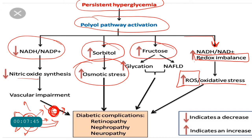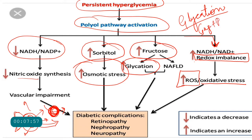When fructose is produced in the polyol pathway, it can cause glycation. Glycation is when a sugar molecule is added to a protein or lipid, producing toxic molecules called advanced glycation end products (AGEs). These trigger leukocytes, induce inflammation, and act as a source of oxidative and inflammatory damage to cells — particularly affecting endothelial cells and the basement membrane — and are therefore a cause of damage in diabetic retinopathy.